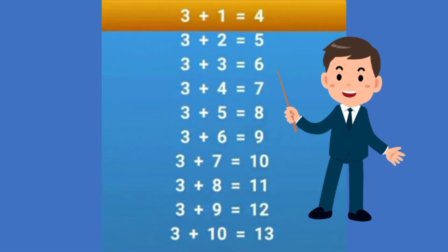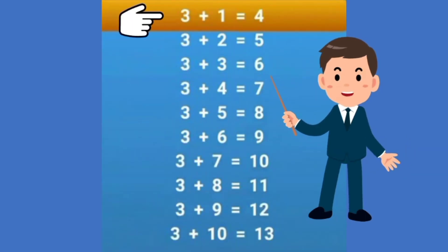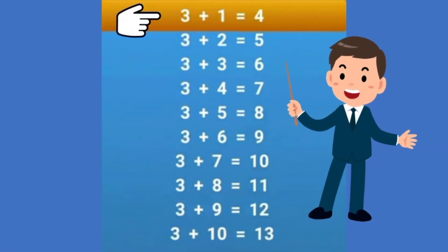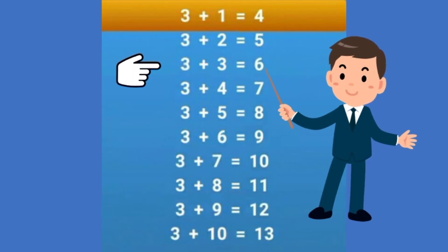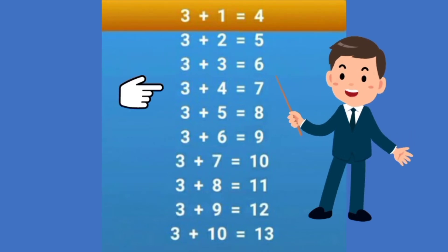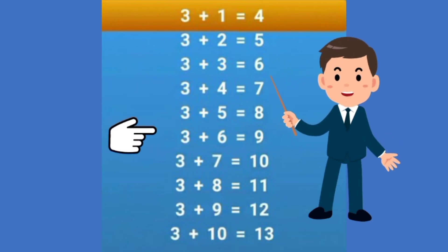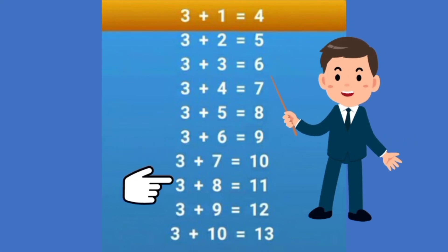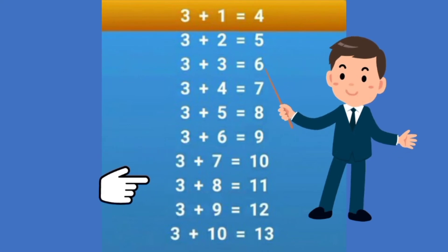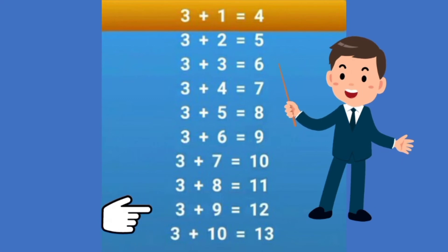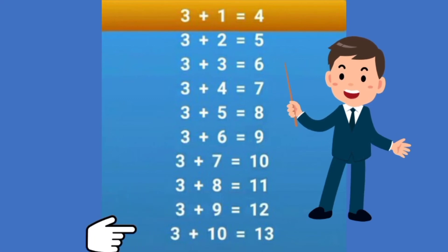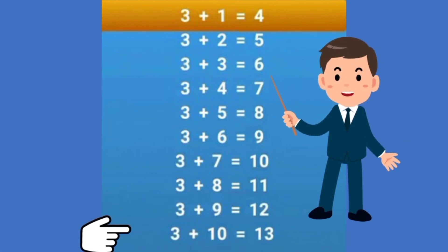Dear children, next see this another table. 3 plus 1 is equal to 4. 3 plus 2 is equal to 5. 3 plus 3 is equal to 6. 3 plus 4 is equal to 7. 3 plus 5 is equal to 8. 3 plus 6 is equal to 9. 3 plus 7 is equal to 10. 3 plus 8 is equal to 11. 3 plus 9 is equal to 12. 3 plus 10 is equal to 13.